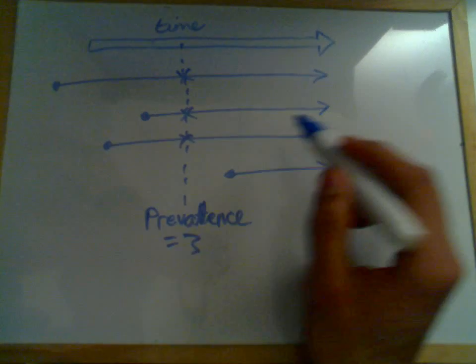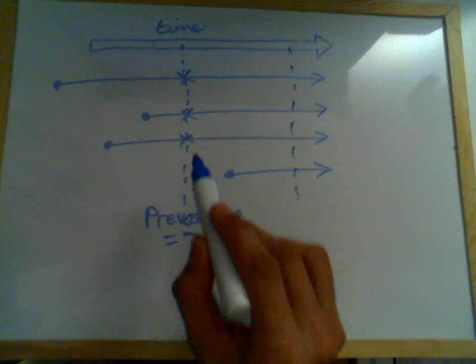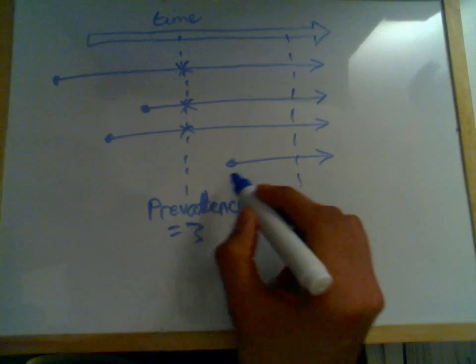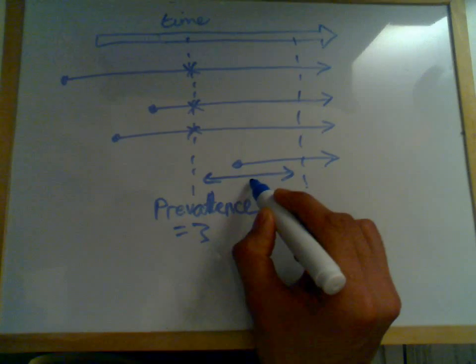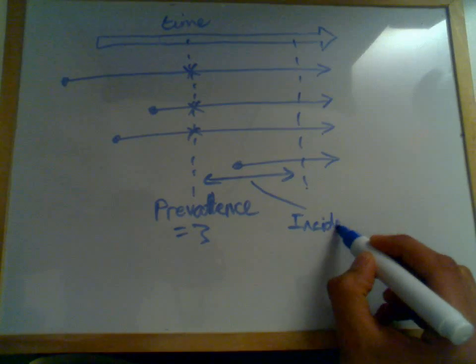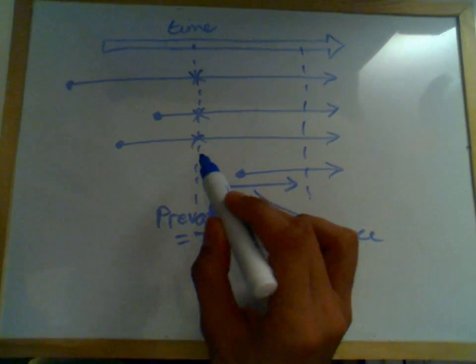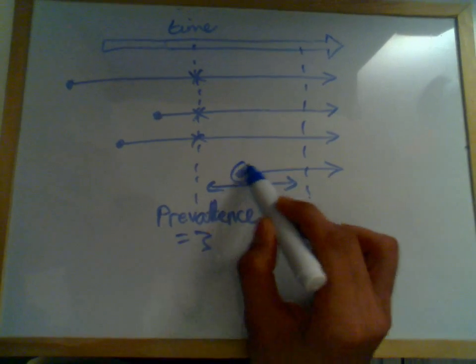Now incidence. Incidence would be when I observe a time period. So whereas this represents prevalence, incidence would be a period like so. And as you can see, over my observed time period, we've only actually got one new case arising.